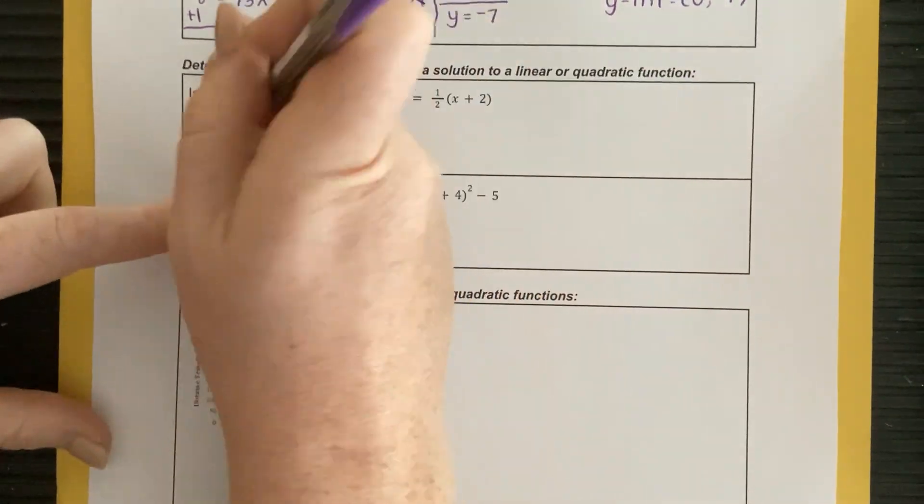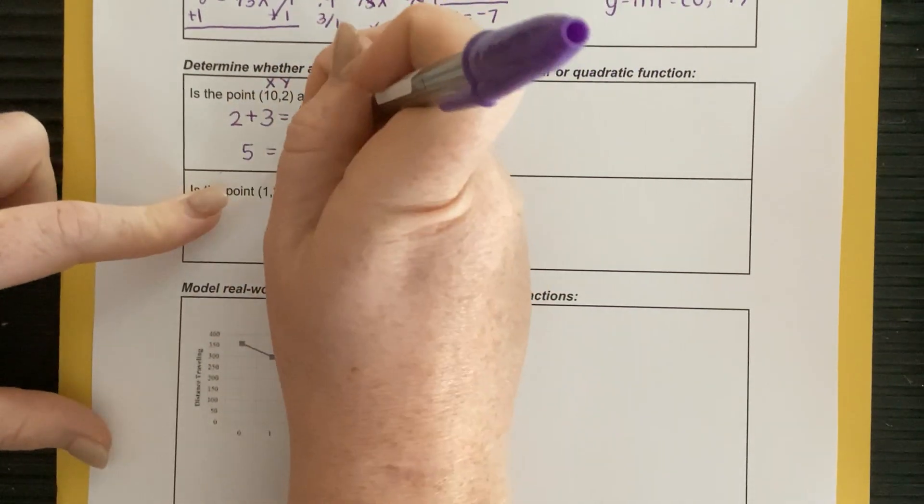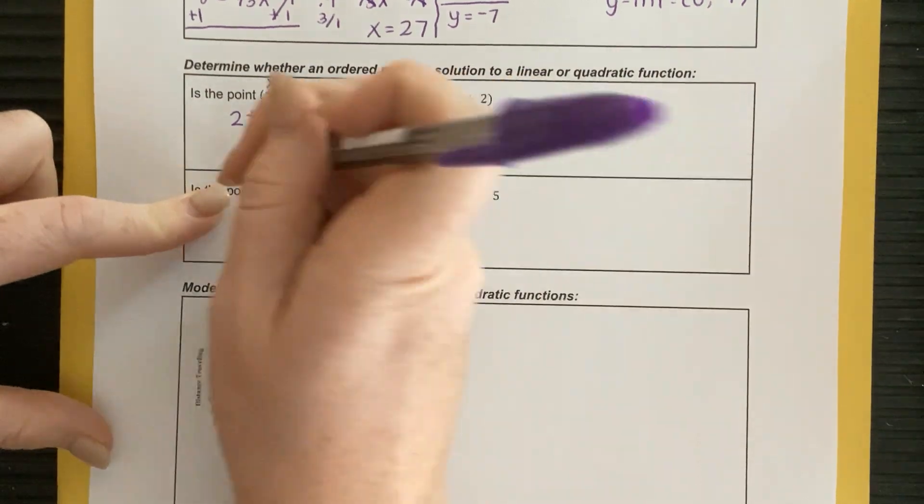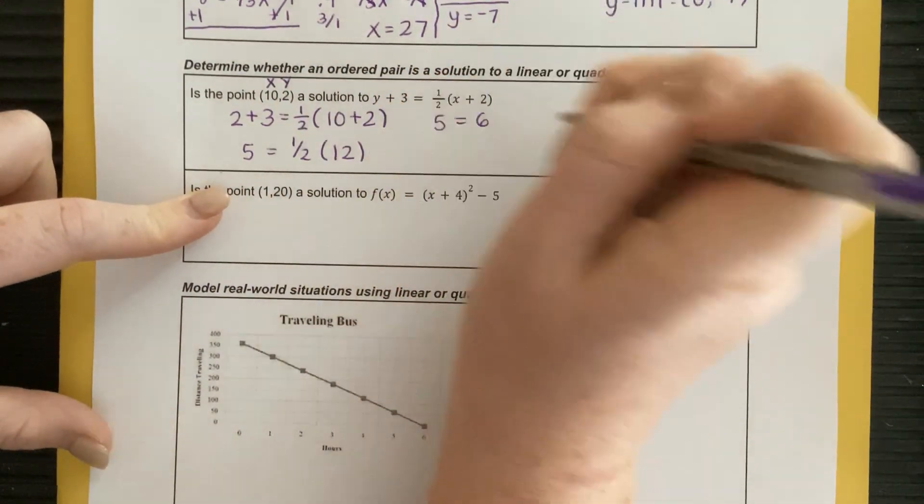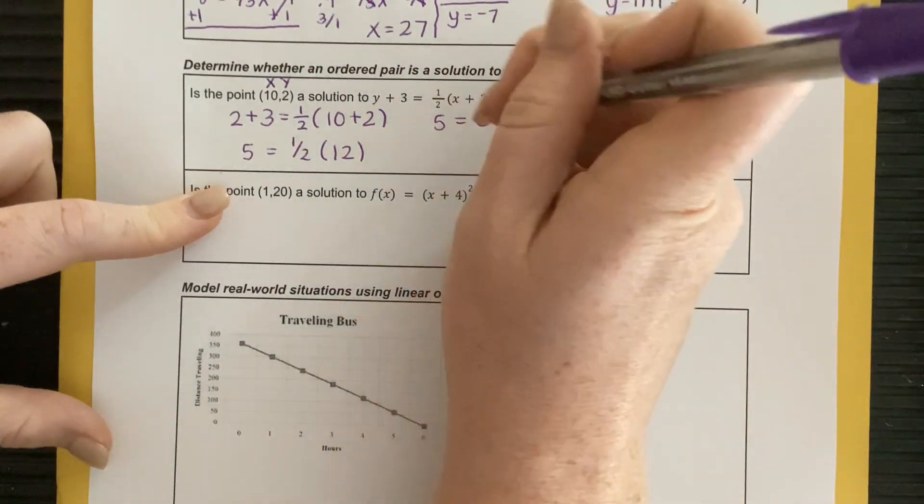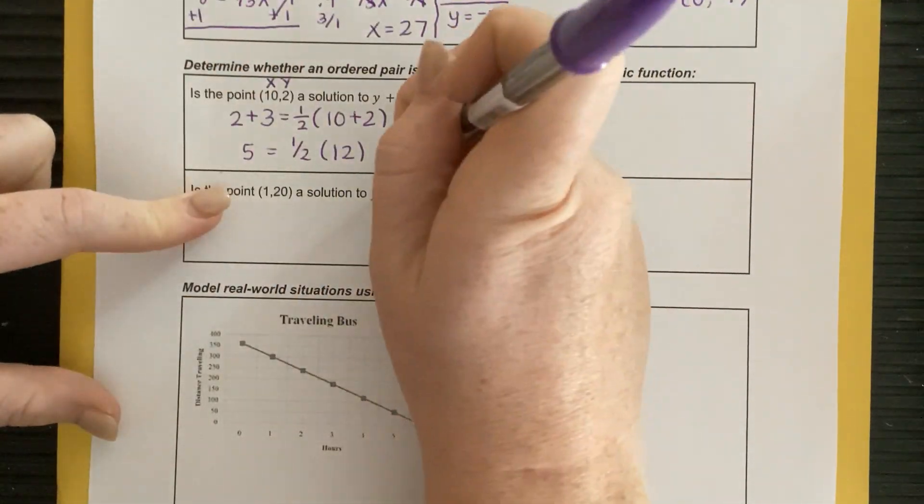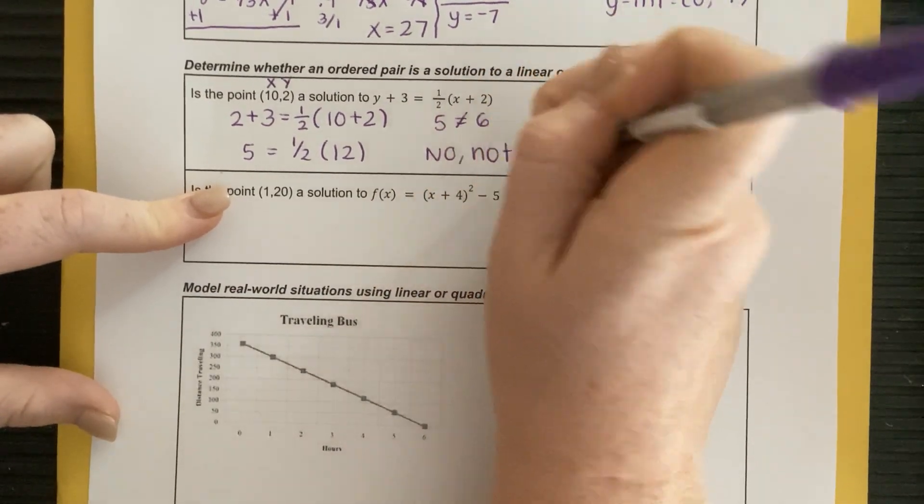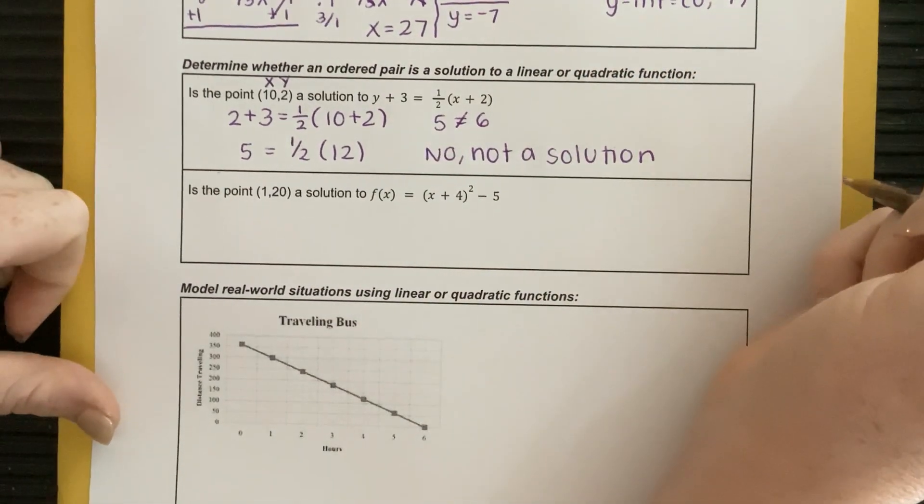So 2 plus 3 is going to give me 5, 1 half. 10 plus 2 is going to give me 12. 12, so if I multiply 1 half times 12, I'm going to get 5 is equal to 6. That is not a true statement. 5 does not equal 6. That's not true. So is this a solution? No, not a solution. Okay, because I don't get a true statement at the end.